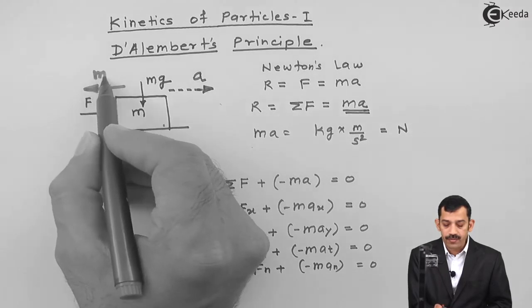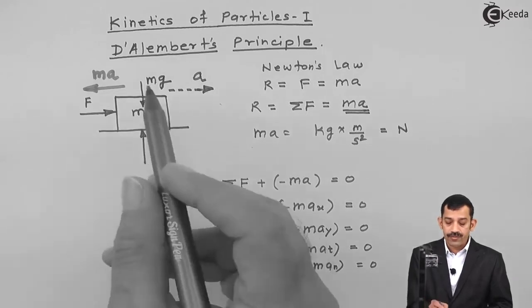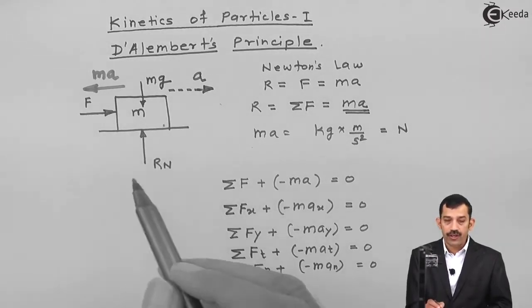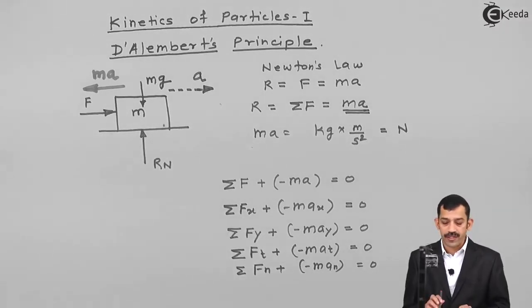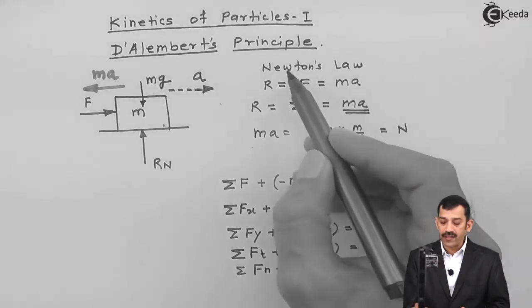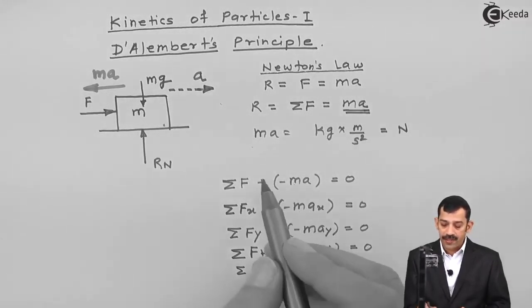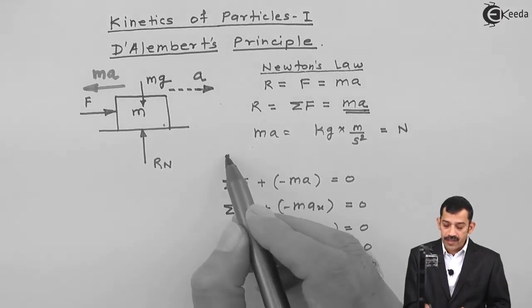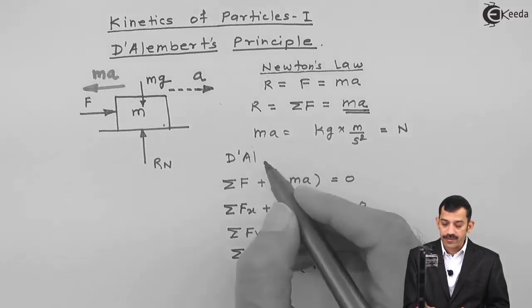If you want to apply the equation, you can write summation of all forces along the x-axis equals zero, that means F minus mA equals zero, which gives F equals mA — basically Newton's Law. But when we write F equals mA with the mA term on the right-hand side, it is called Newton's Law. If we write the mA term on the left side, then the same equation is called D'Alembert's Principle.